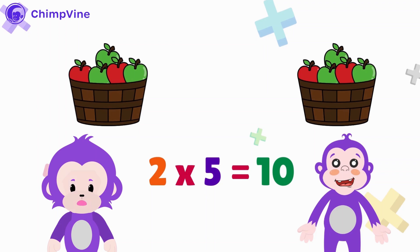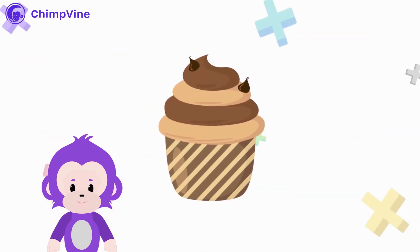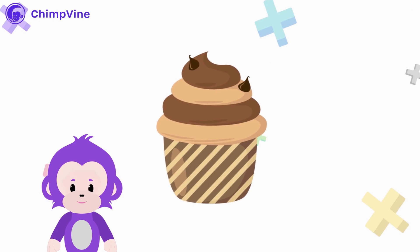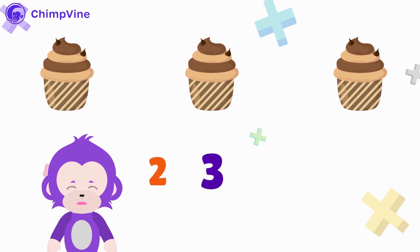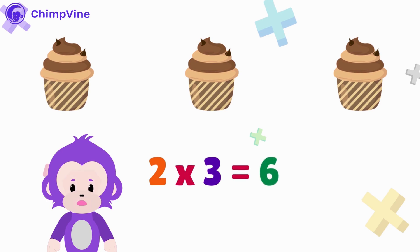Multiplication can be used for all sorts of things, not only counting fruits. Let's say you're baking delicious cupcakes. If your recipe needs two chocolate chips per cupcake and you're making three cupcakes, how many chocolate chips do you need altogether? We can use multiplication again. First we take the number of chocolate chips per cupcake, which is two. Then we take the number of cupcakes, which is three. Now put the times sign in between. We get two times three, which is equal to six. So the total number of chocolate chips we will need is six.